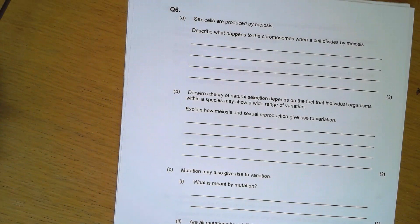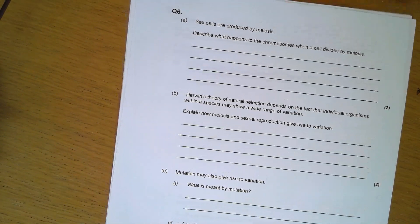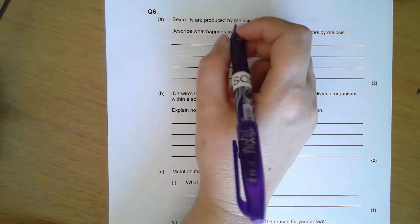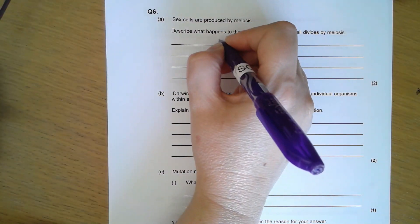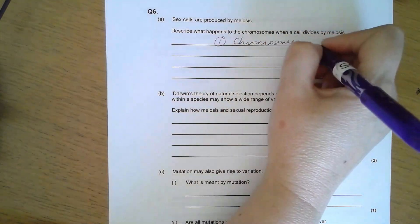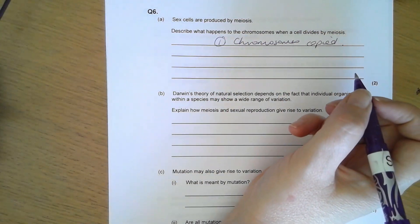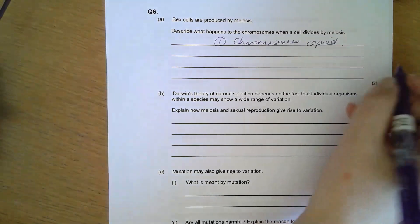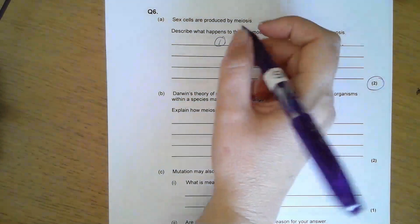Question six. Sex cells are produced by meiosis. Describe what happens to the chromosomes when the cell divides by meiosis. First of all, the chromosomes are copied, because the first part is just the same as mitosis.